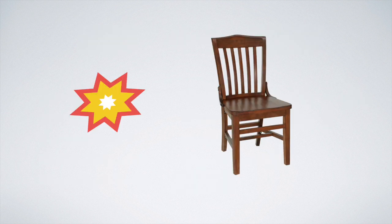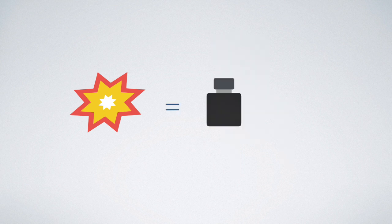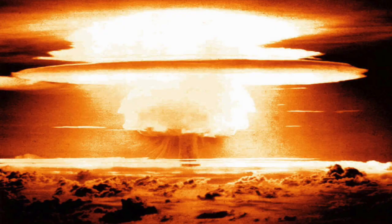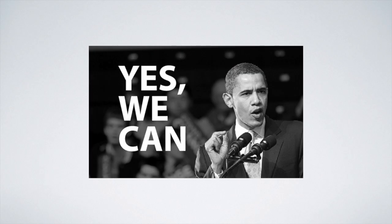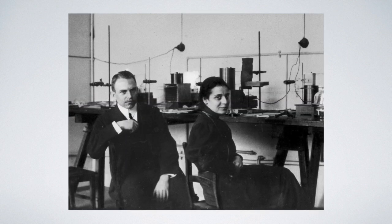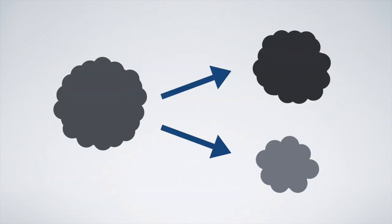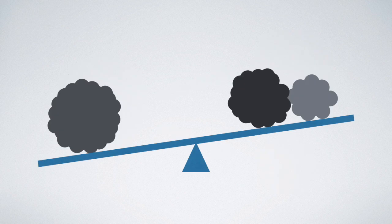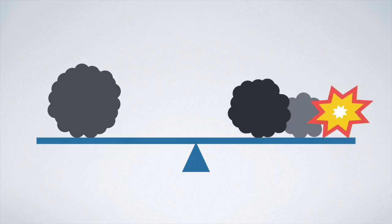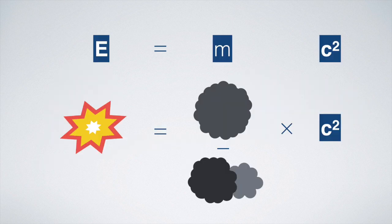If this formula was correct, it would mean that mass holds an enormous amount of energy. This would later be proven when the first atoms were split in laboratories. When a big atom is split, the total weight of the parts is smaller than the mass of the atom before it was split. The missing mass is directly transformed into energy in the proportion of E equals mc squared.